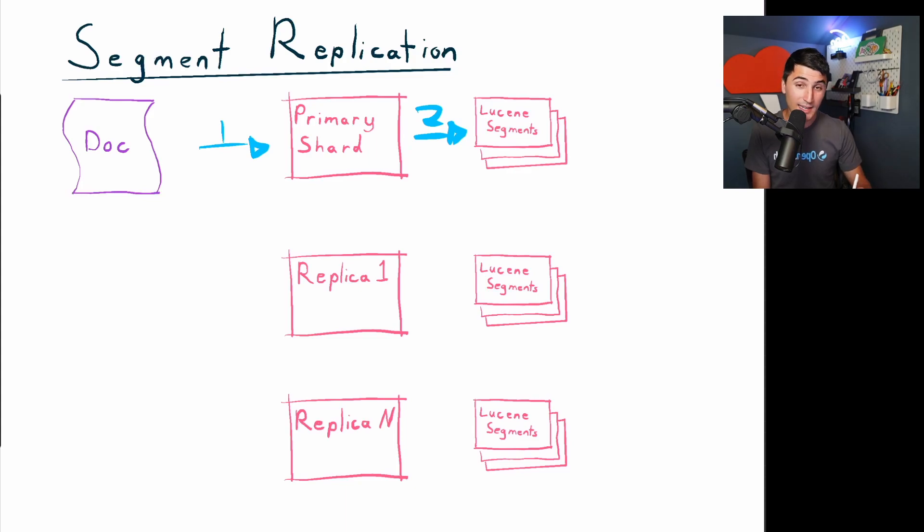Instead of sending the original document now, we're going to send the materialized Lucene segments across the network to our replicas, thereby skipping the need for the replicas to re-ingest that. And this is going to happen after a refresh interval. That is a time period that you can set. It defaults to one second. And this is really cool.